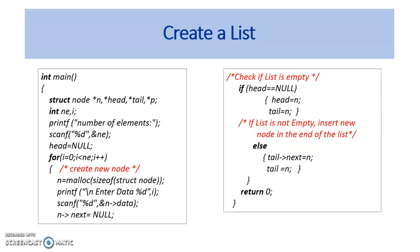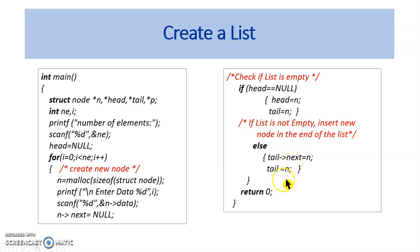When the list is empty, that is for the very first iteration, the head equal to null condition is true. So set the head pointer and tail pointer to point to n. When the list is not empty, that is for subsequent iterations, set tail.next equal to n to link the new node to the last node which is the tail node. Then set the new tail to be n. This iteration continues for the number of elements times given.